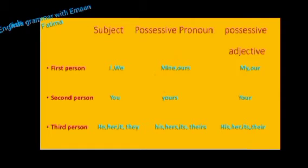Third person: subjects 'he,' 'her,' 'it,' 'they.' Possessive pronouns are 'his,' 'hers,' 'its,' and 'theirs.' And possessive adjectives are 'his,' 'her,' 'its,' and 'their.'